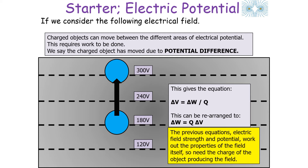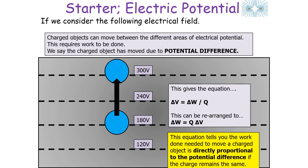Previous equations such as electrical field strength and potential work out properties of the field itself, and so use the charge of the object producing the field. This equation also tells you that the work done needed to move a charged object is directly proportional to charge, provided the potential difference remains the same.